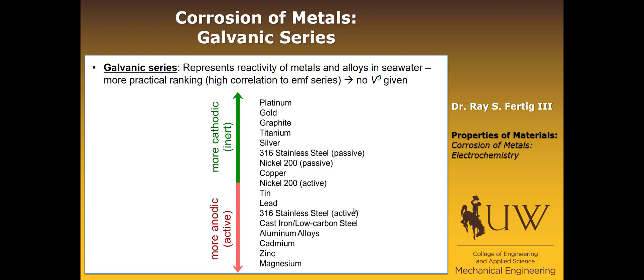In the galvanic series, we're just getting a relative ranking. The further apart two metals are in the galvanic series, the larger the delta V, even if we don't know what the delta V is. Same thing as the EMF series: near the top of the galvanic series, those materials are hard to oxidize and they tend to be cathodes or more cathodic. At the bottom of the series, it's much easier to oxidize, so those are going to be more anodic or active. That sort of concludes what you need to know about electrochemistry before we go on to talk about other issues and mitigation techniques for corrosion.